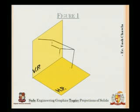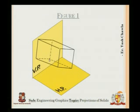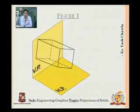Let's see the isometric view of the problem first. You can see that the base is resting on VP, with this point 30 mm above HP. One of its sides is making an angle of 30 degrees with respect to the horizontal plane, that is HP. This is the case in which the prism is lying on VP — the base of the prism lies on VP and one of its side edges makes 30 degrees with HP.